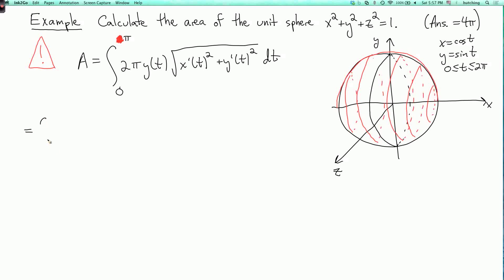So then this is the integral from zero to pi of two pi times y of t, and y of t is sine t. And you'll remember from the calculation of the length of a circle that for this particular parameterization, ds is just equal to dt. In other words, this square root of x prime squared plus y prime squared is the square root of sine squared plus cosine squared, which is one. So I just put a dt here.